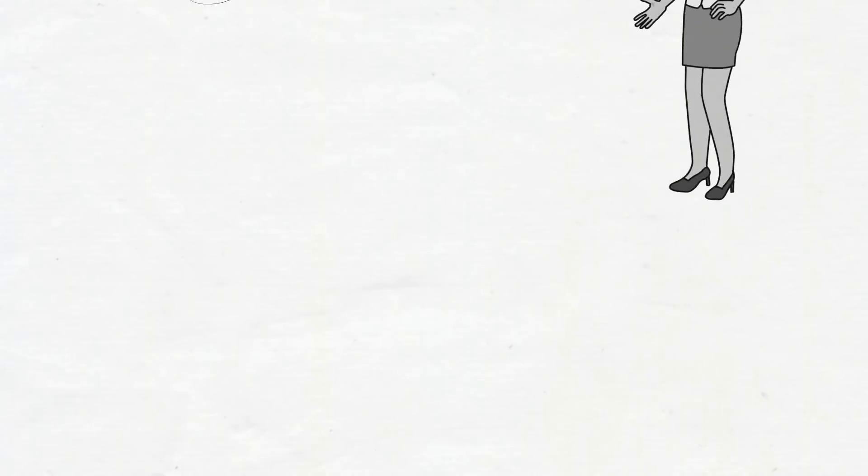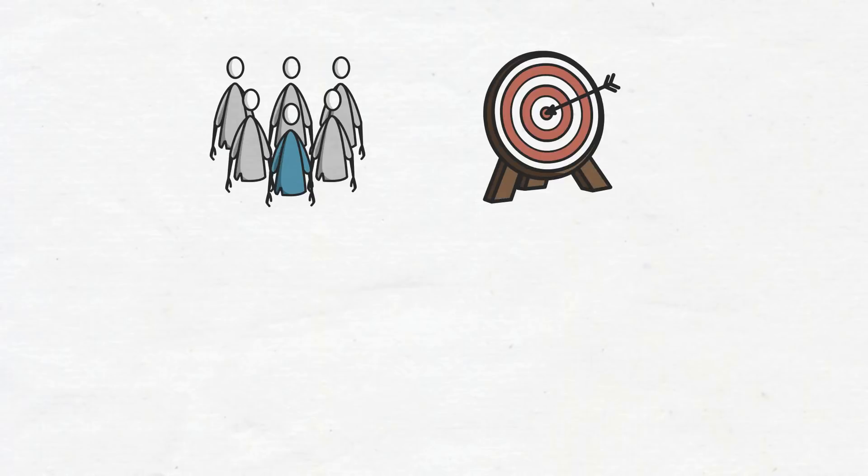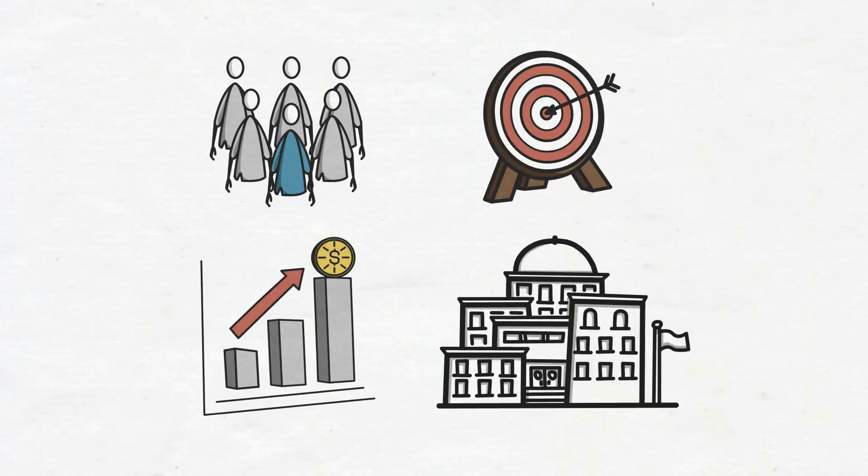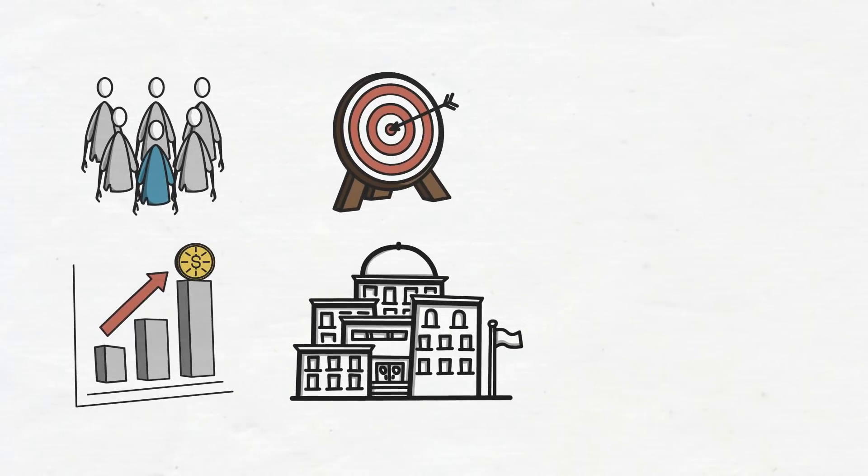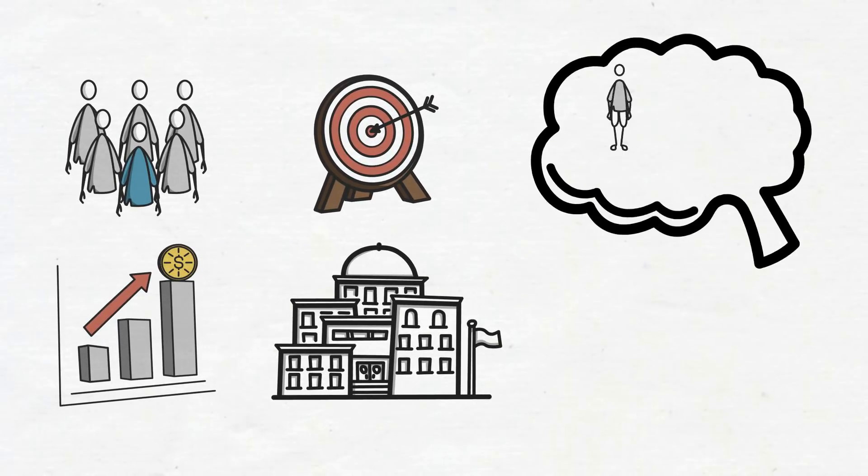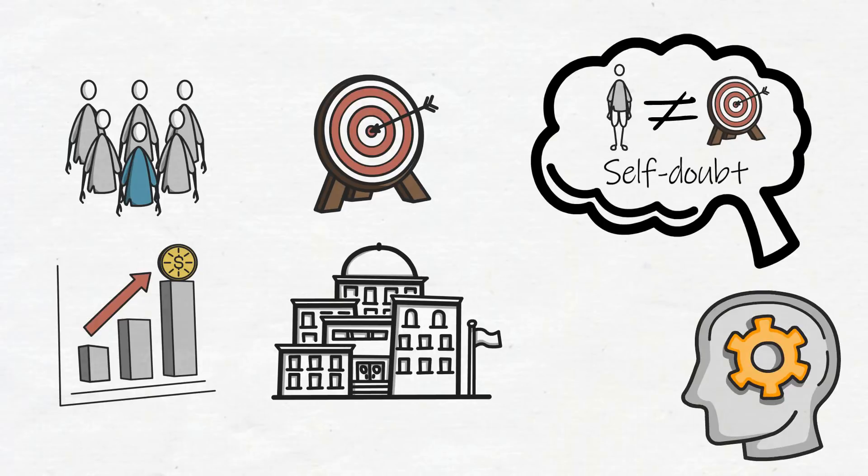Later, Maltz discovered a similar phenomenon when people around him set out to accomplish big goals, like hitting a big sales target or improving one's grades to get into a top college. If the person's self-image was not sufficient for the goal they were aiming for, deep down they doubted their capacity to achieve that goal and that doubt interfered with their creative mechanism.